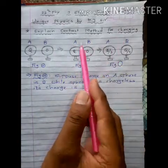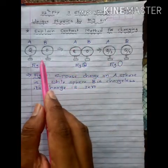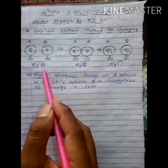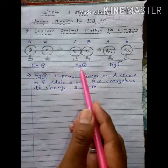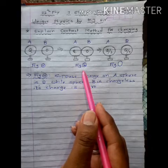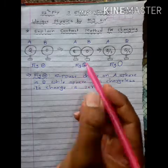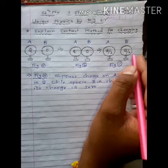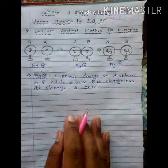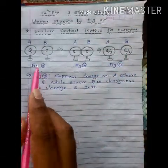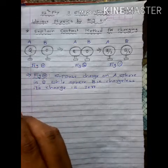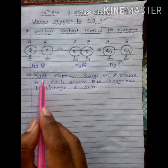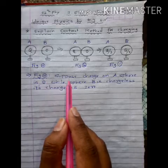We have three situations. Figure A represents the initial situation, Figure B represents the intermediate situation, while Figure C represents the final situation. First of all, we explain the initial situation.